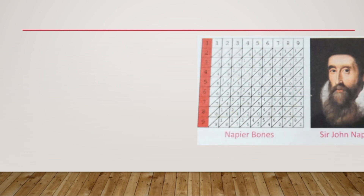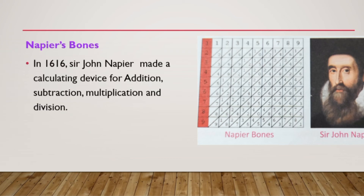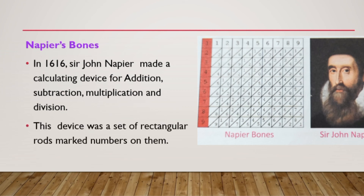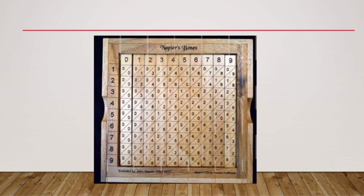The next calculating device was Napier's Bones. In 1617, Sir John Napier made a calculating device for addition, subtraction, multiplication, and division. First it was used only for addition and subtraction, and later it was modified to calculate multiplication and division as well. The device was a set of rectangular rods with numbers marked on them, as you can see in the picture.